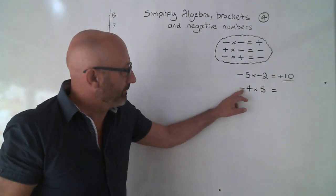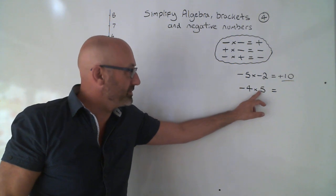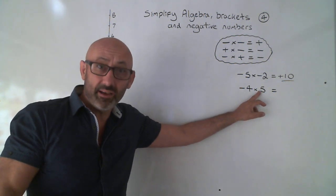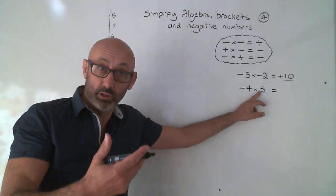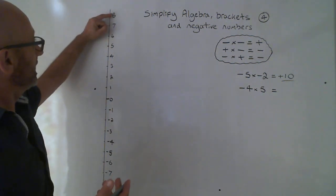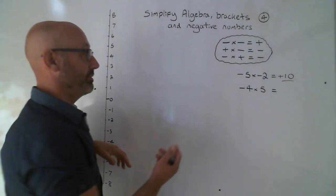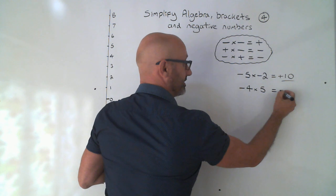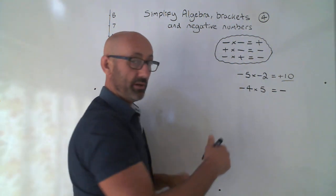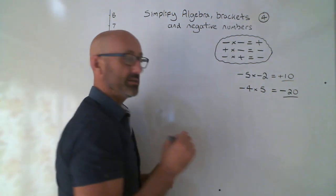Look at this next one. That is minus before the 5, there isn't anything there, is there? So that means it must be a plus. All these numbers here haven't got anything before it, have they? So it must be a plus. Minus times plus is minus. 4 times 5, 20. Do it in two separate steps.